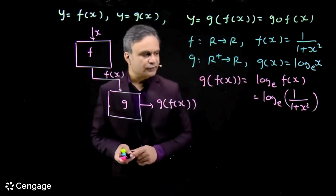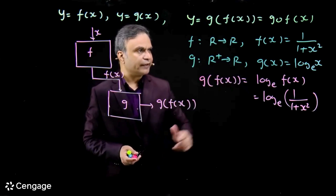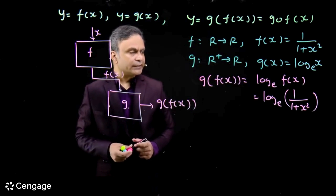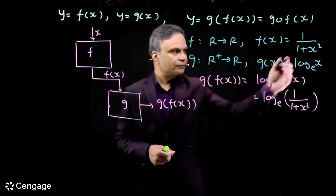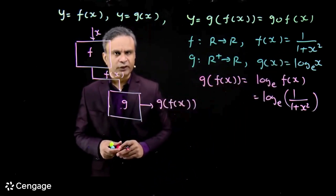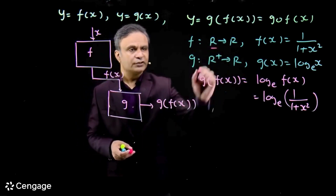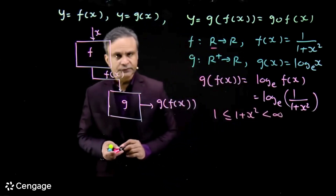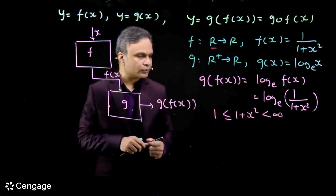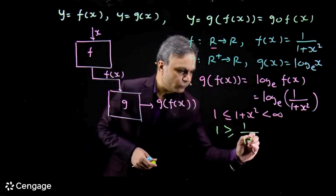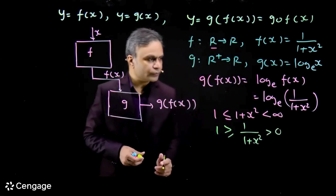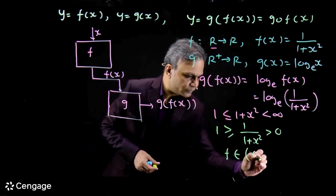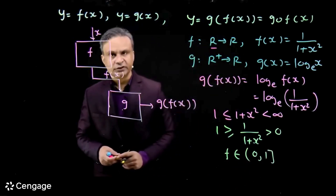Let us find the domain and range of this composite function. First we find the range of f(x) — the output values of f(x). The expression 1 + x² is always greater than or equal to 1 for all x belonging to R. Taking the reciprocal, we get 0 < 1/(1+x²) ≤ 1. So the range of f(x) is the interval (0, 1].